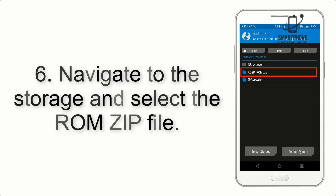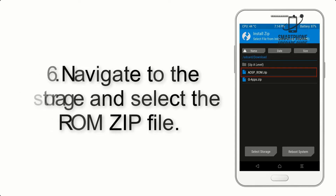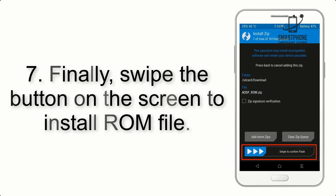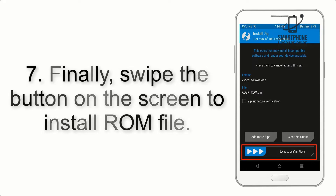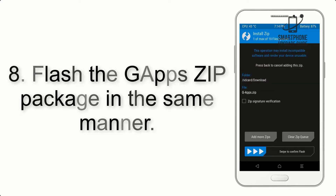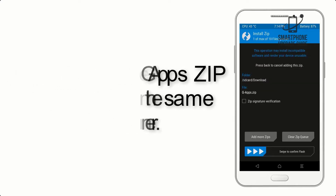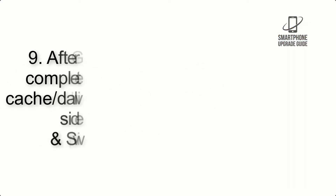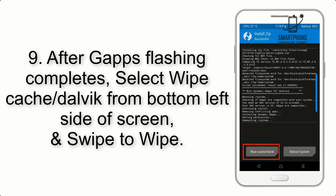Step 5: Go back to the recovery main screen and tap on the Install button. Step 6: Navigate to the storage and select the ROM zip file. Step 7: Swipe the button on the screen to install the ROM file. Step 8: Flash the GApps zip package in the same manner.